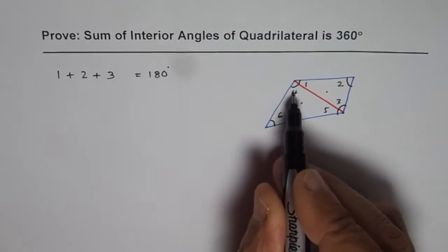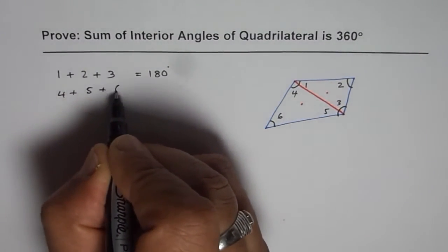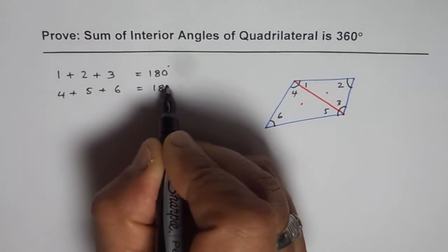And we know measurement of angle four plus five plus six is also 180 degrees.